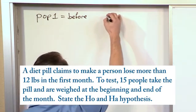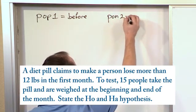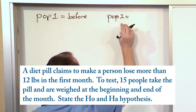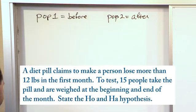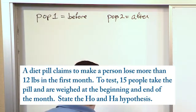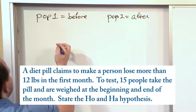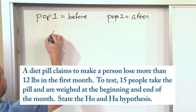Population two will be the weights that we collect from these people after, basically after the one month is up. And the claim—it says right here—a diet pill claims to make a person lose more than 12 pounds in the first month. Now let me ask you a question. Let me draw something that may be helpful here.